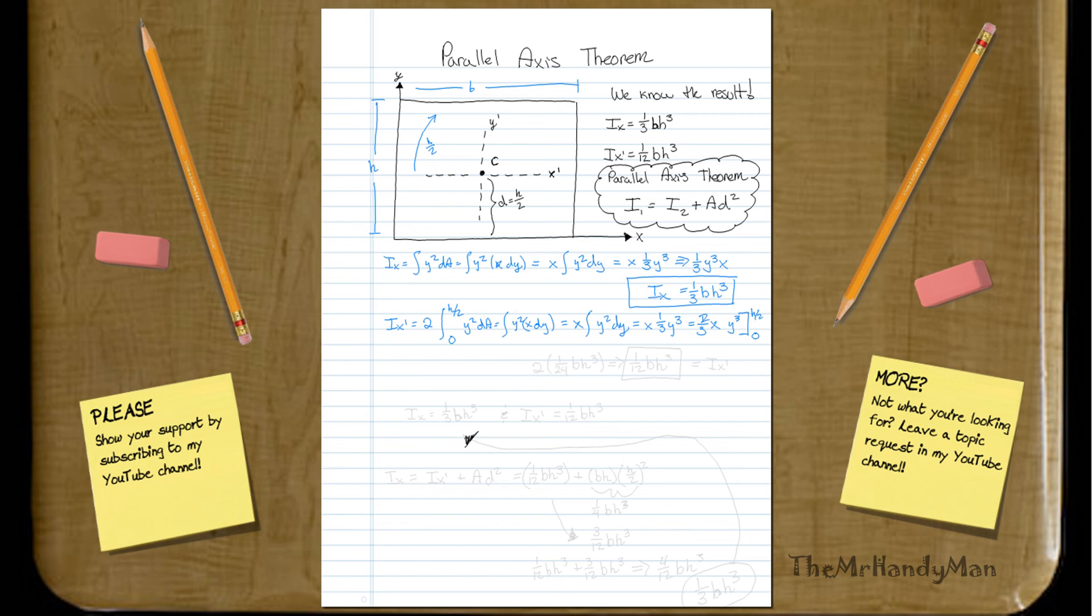So, knowing this, it kind of works all out, and you end up getting what I would call 2 times 1 over 24 base times height cubed, which, when you equal that out, that'll equal 1 twelfth base times height cubed.